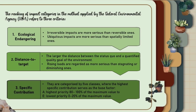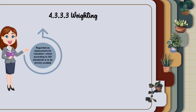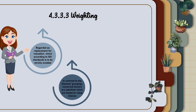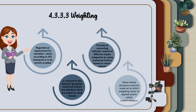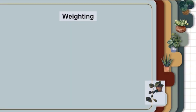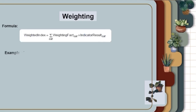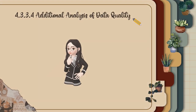Class A is highest priority — 80 to 100% of the maximum value — down to class E, lowest priority — 0 to 20% of the maximum value. Next, weighting. Regarded as a replacement for valuation, which according to ISO standards is to be strictly avoided. In contrast to grouping, numerical factors are admitted which are based on value choices. Weighting is the process of converting indicator results of different impact categories using numerical factors based on value choices. Value-based decisions must be made as to which weighting factor is applied and to which impact category. The tables show the example of the results of weighting. The weighted index for incandescent lamp is 8.5 × 10^10 per year and for fluorescent lamp is 1.4 × 10^10 per year.